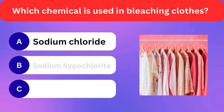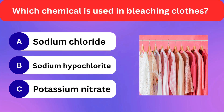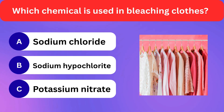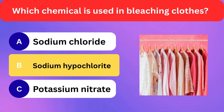Which chemical is used in bleaching clothes? Sodium chloride, Sodium hypochlorite, Potassium nitrate. Correct answer is sodium hypochlorite.